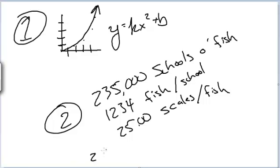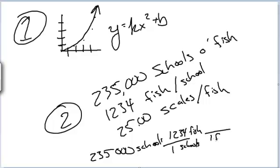Now let's make sure we know how to do unit conversions appropriately. I know most of you just multiplied it out, but let's check this. We have 235,000 schools, and you need to put schools on the bottom. One school, as you can see from the second conversion, for 1,234 fish. Fish goes on the bottom. That's canceled. Now we have 25 scales on top.